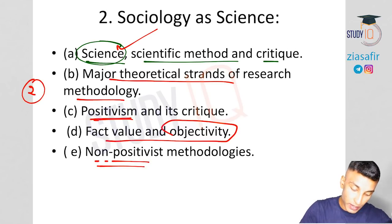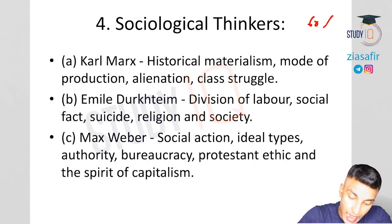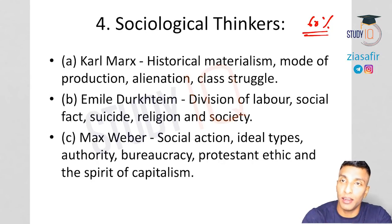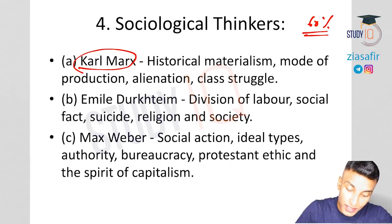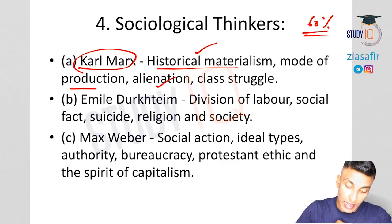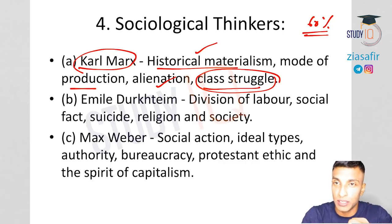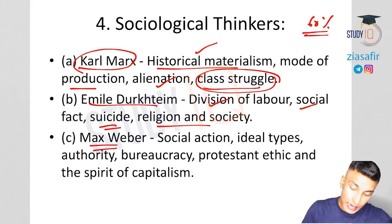Variables, sampling, hypothesis, reliability, and validity are all possible short-note topics — you can expect at least one or two questions from this section. The next section is the most important: thinkers contribute directly to about 60% of your syllabus and indirectly to up to 80%. Karl Marx is a very important thinker. His theories — historical materialism, mode of production, alienation, class struggle, capitalism, socialism, and communism — will all be covered.